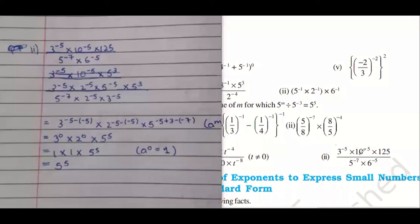So, our last question is 3 power minus 5 multiplied by 10 power minus 5 into 125. Again, rule number 1, make the basis prime. So 125 can be written as 5 power 3. Interesting one is this one. I like this question.